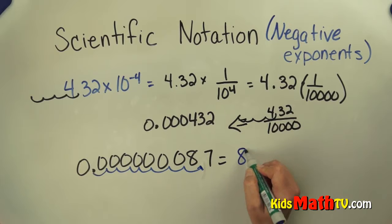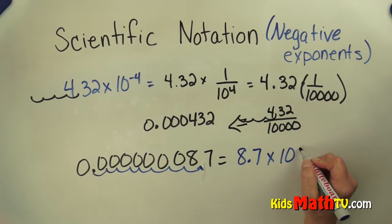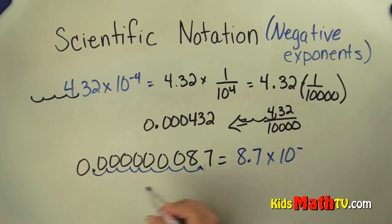That becomes 8.7 times 10 to the, and this is a really small number, to the negative 1, 2, 3, 4, 5, 6, 7, 8. Negative 8.